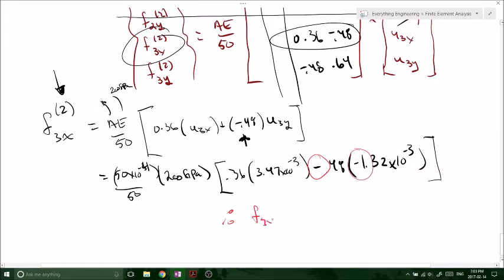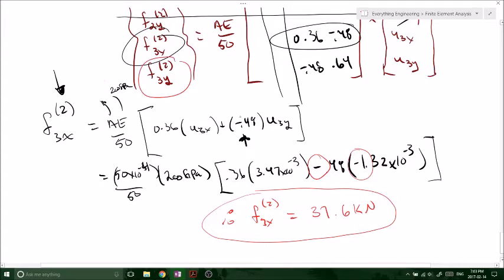So then we've got F3X due to number 2. If you do this out, multiply this out, you get 37.6 kilonewtons. All right, so there's the first one. So now we've got to solve for the Y, right? So F3Y, same thing, but we're looking at this row now.